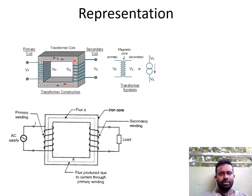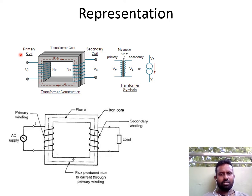This is a general representation of a transformer. This is the core of the transformer. This is the primary turns and this is the secondary turns. Vp is the primary voltage. This is the primary coil that is wound on this limb, and this is the secondary winding wound on this limb. The lines represent the magnetic core; this is the secondary of the transformer and this is the primary of the transformer.